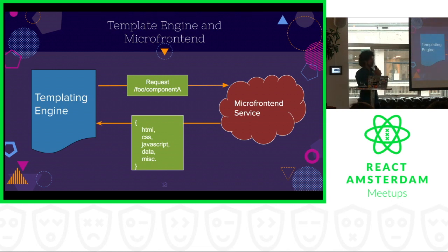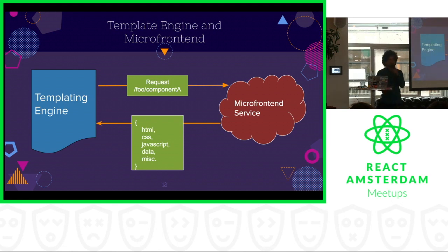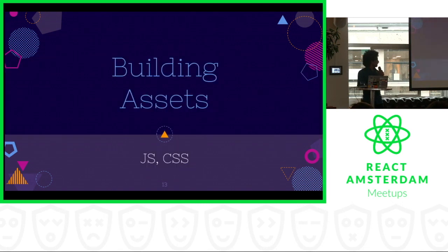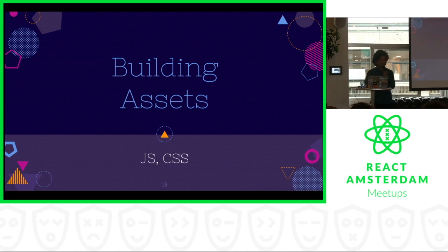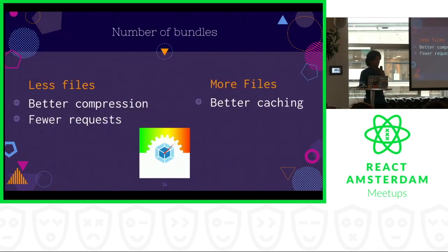For HTML, it's simple server-side rendering — you server-side render a React app and you get HTML. Now let's look at CSS and JavaScript. Before getting into how we build CSS and JavaScript, let's look at the different strategies for building assets. There are two trade-offs whenever we bundle files: whether we go with fewer files or more files. Fewer files means better compression, because compression works by eliminating repetitions, and you need more text to have more repetitions. Also fewer files means fewer requests, which means less round trip time.